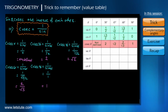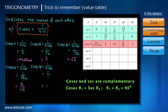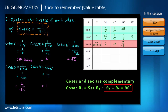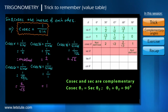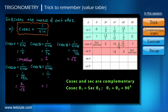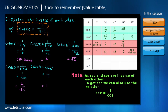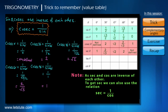We know that cosecant and secant are related through complementary angles — they are always the same for any two angles whose sum is 90 degrees. Therefore cosec 0° equals sec 90°, cosec 30° equals sec 60°, cosec 45° equals sec 45°, cosec 60° equals sec 30°, and cosec 90° equals sec 0°. So far we have found the values for sine, cosine, cosecant, and secant.